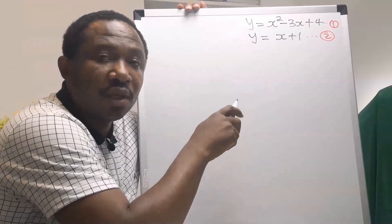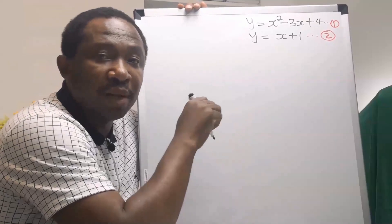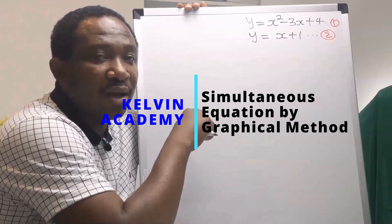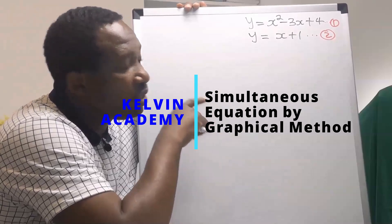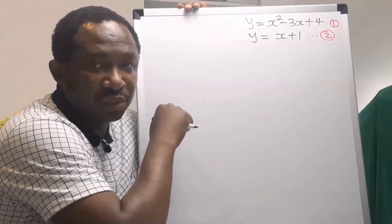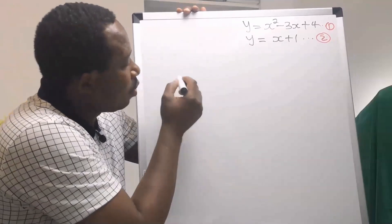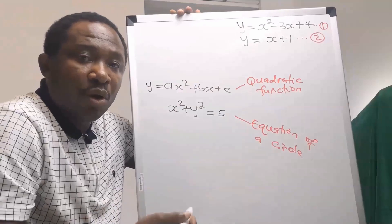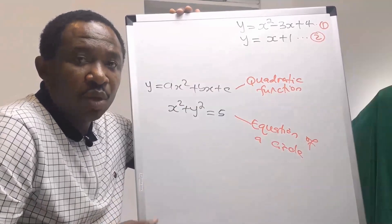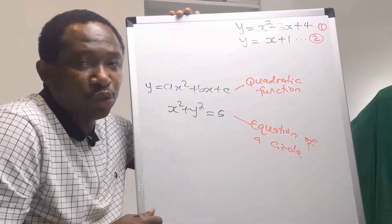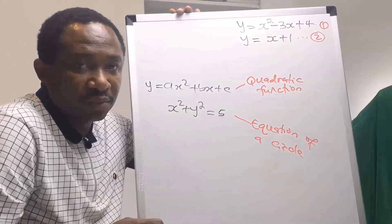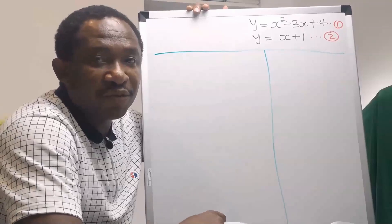In this problem, we can use the substitution method. However, the aim in this video is to actually learn the graphical method. For quadratic functions or equations of a circle, we can only apply the substitution method or the graphical method.